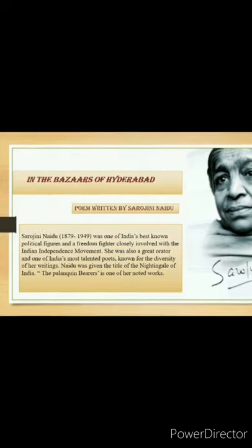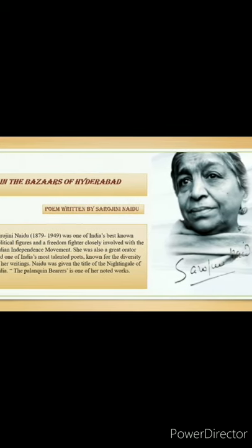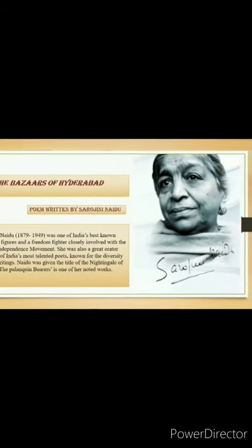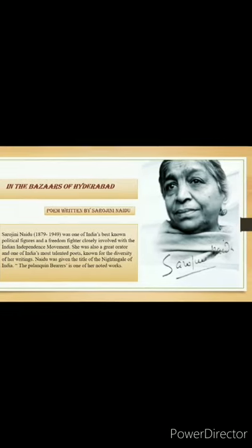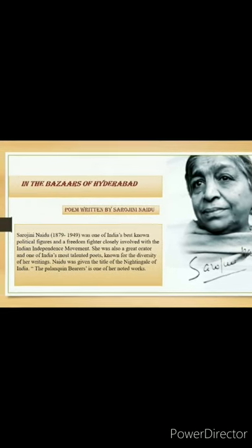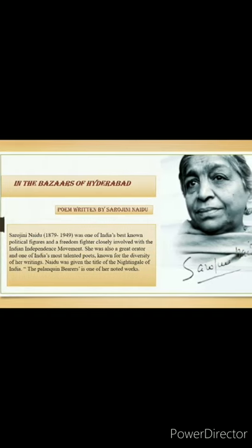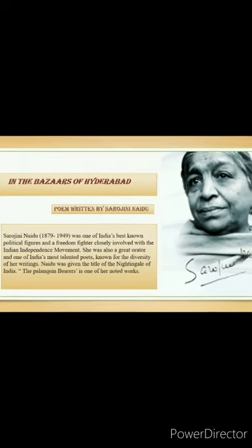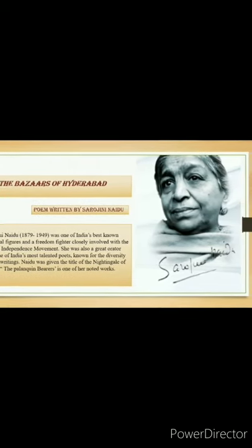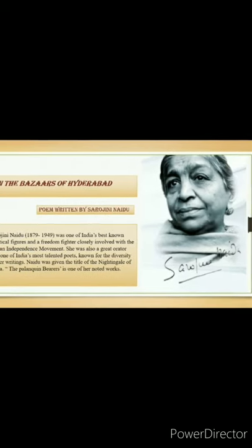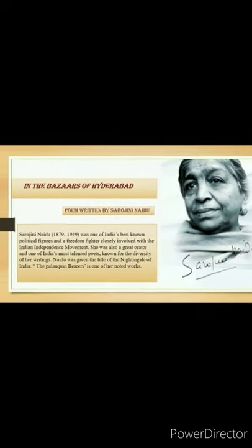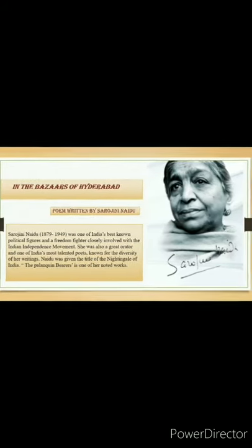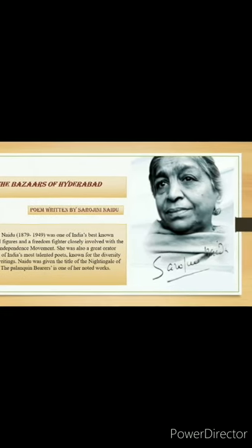The poem is in the form of questions and answers. The poet asks the questions and the merchants answer them. Through this technique, she makes the picture of the bazaar visible to us. The poem contains five stanzas of six lines each. It follows a unique rhyme scheme where the second, fourth and sixth lines in each stanza are rhyming. The last stanza is a slight exception though.